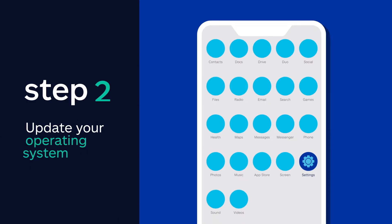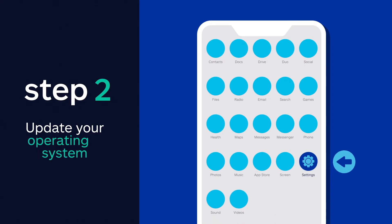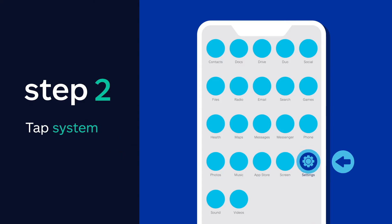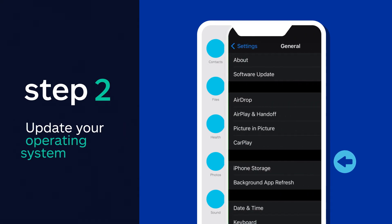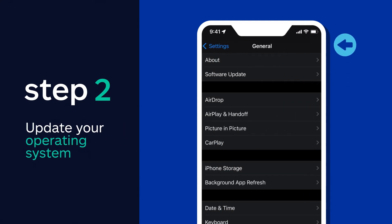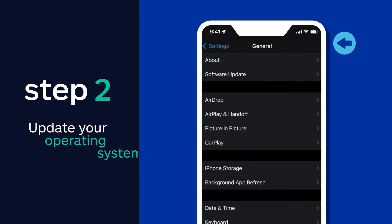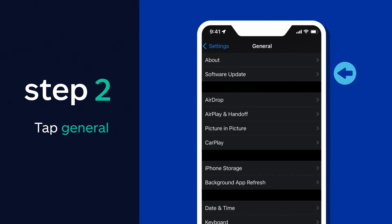Now, you'll want to make sure your operating system is updated. For Android users, go to your phone's Settings app and tap System, then Advanced and System Update. iPhone users should go to your phone's Settings app and tap General, then Software Update.